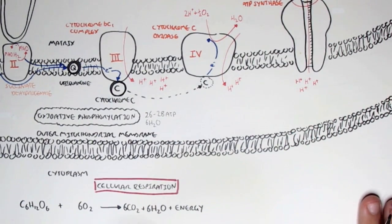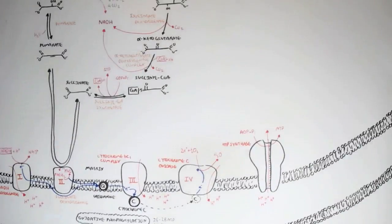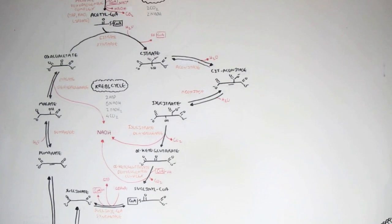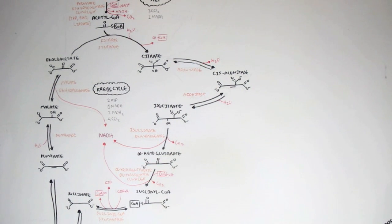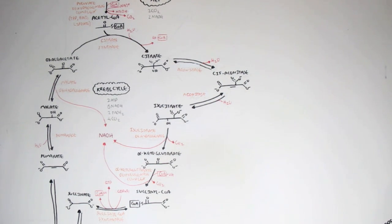I hope you enjoyed this video. If you click on the link, you can learn more about oxidative phosphorylation and why 10 NADHs and 2 FADH2s produce between 26 to 28 ATP through oxidative phosphorylation. Thank you.